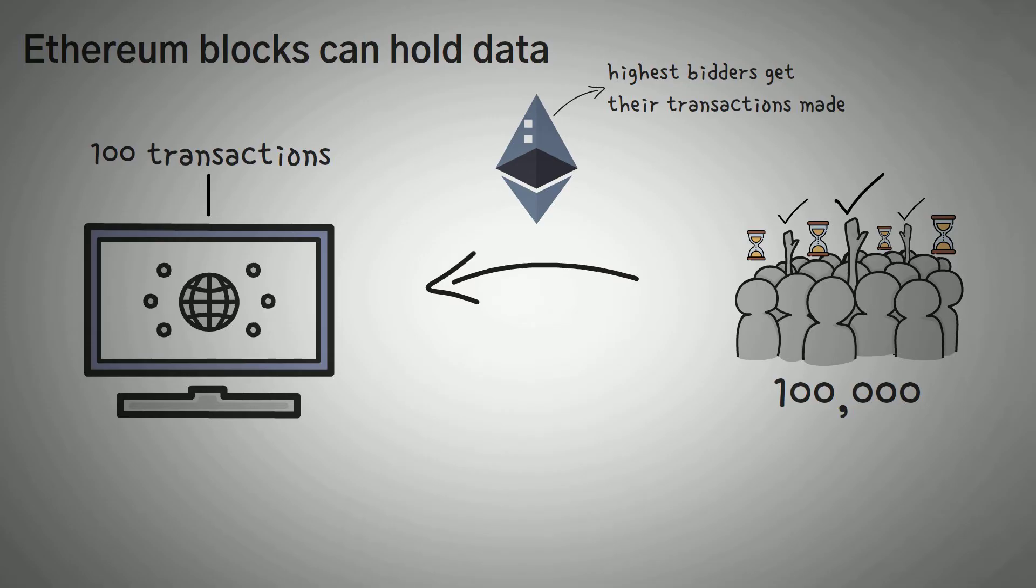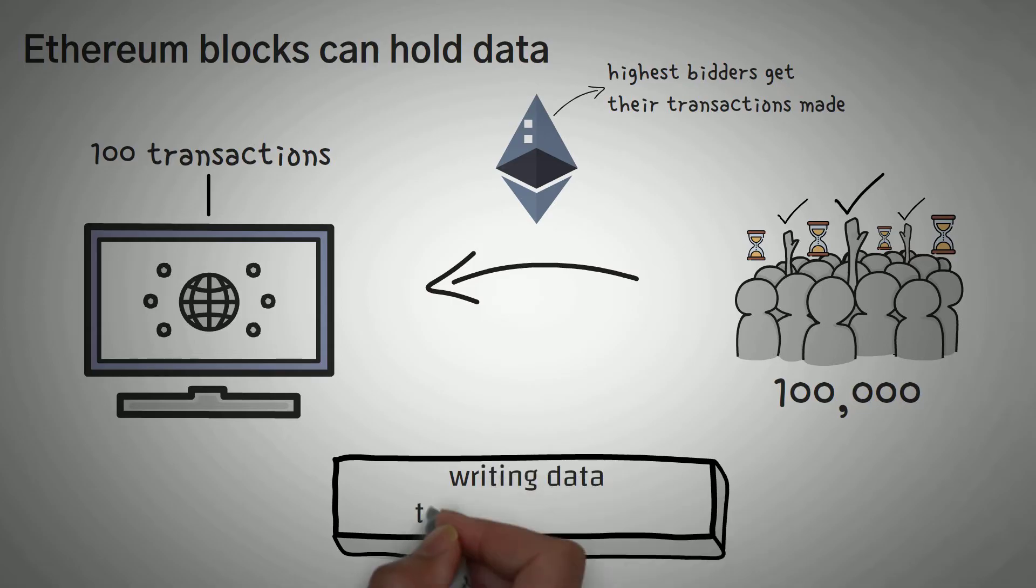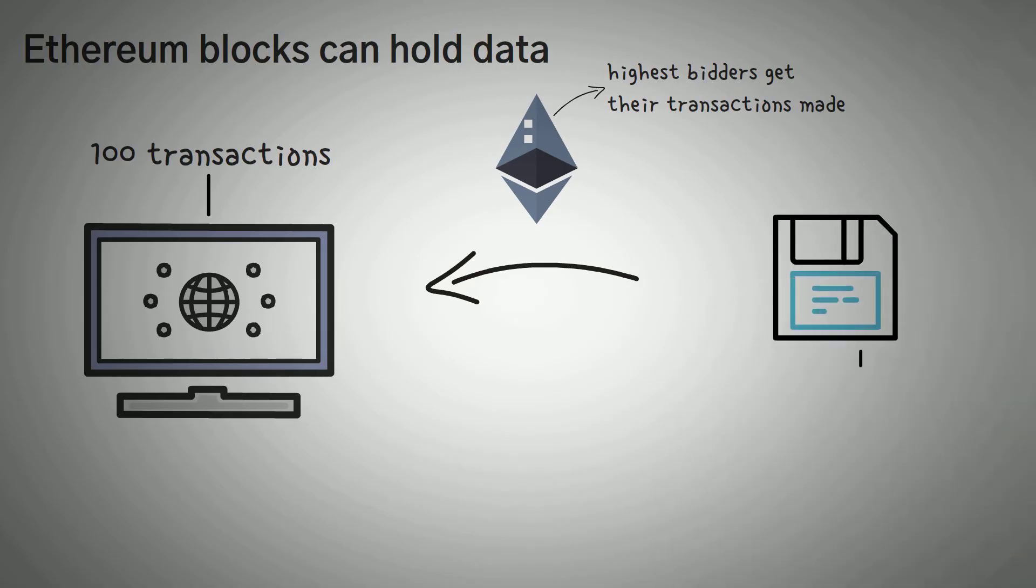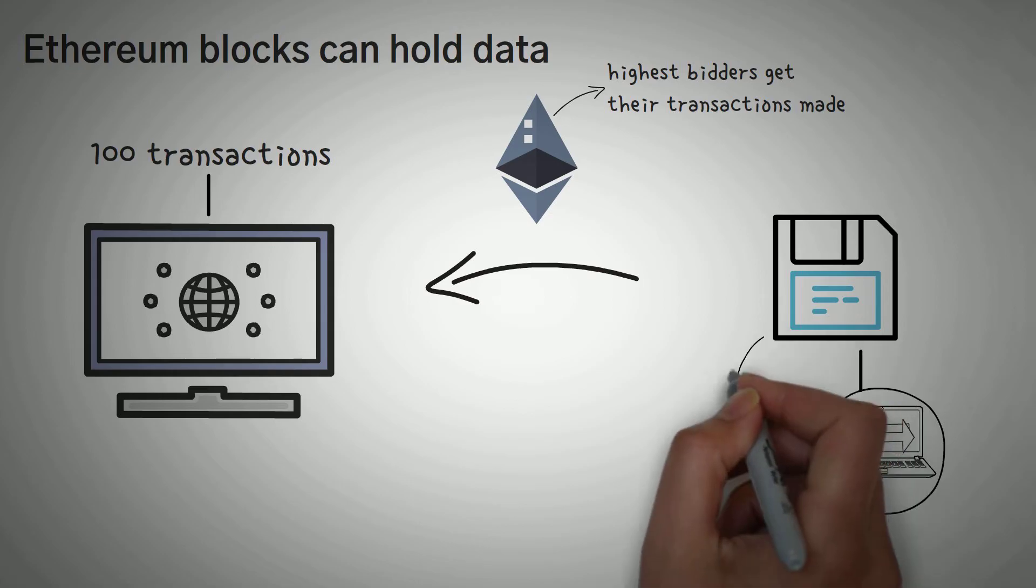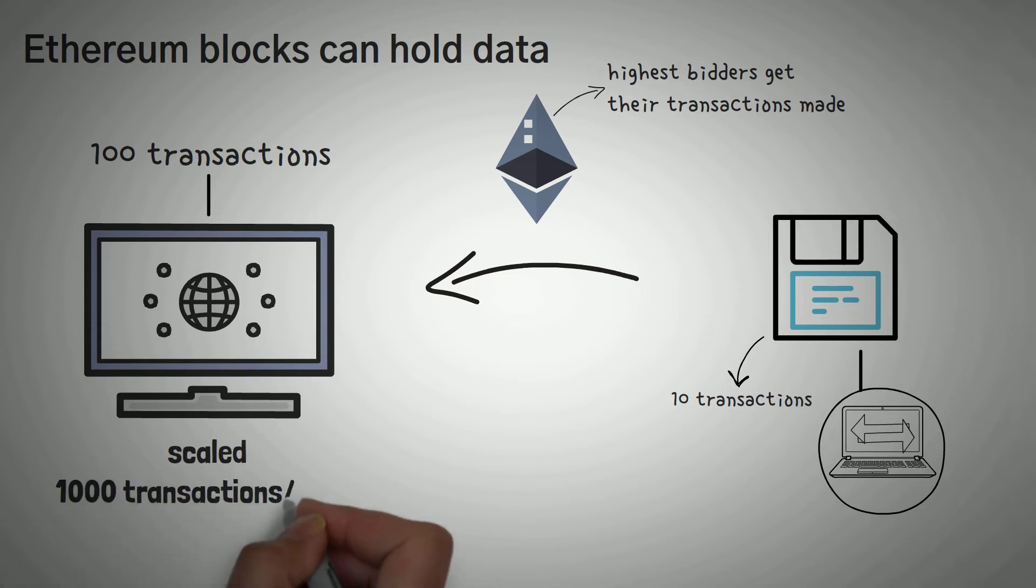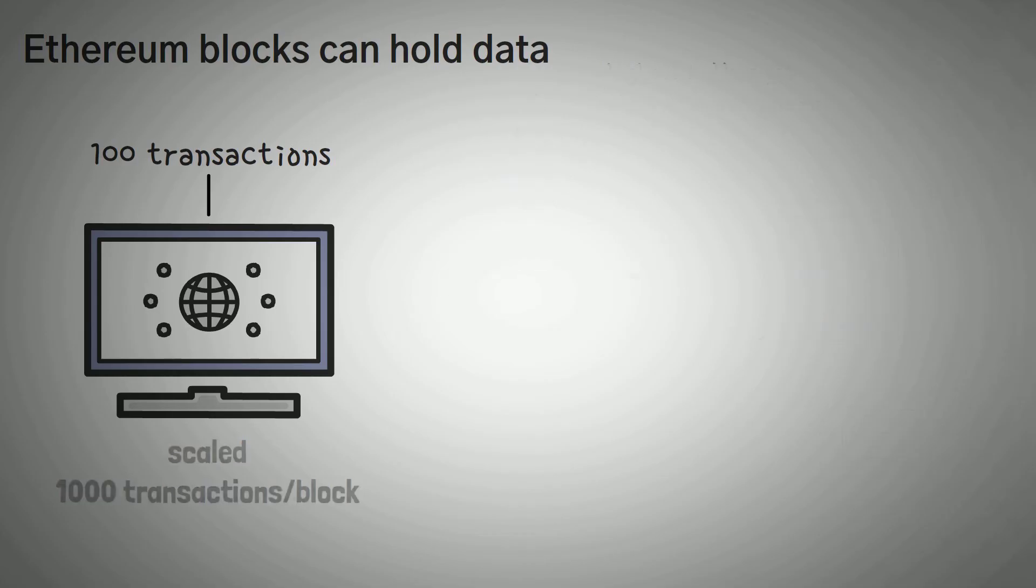Those fees can start to get expensive, and so each transaction has to be important. Do you remember how I said you could also write data to the blockchain? So one of those 100 transactions could also be just data instead of a whole transaction. In the data, we could write a whole bunch of other transactions. If one data entry in the block could be 10 transactions, we now have effectively scaled to 1000 transactions per block.